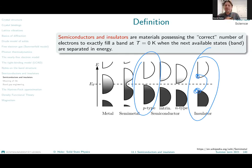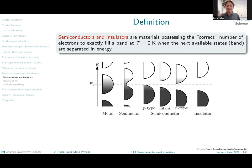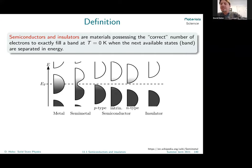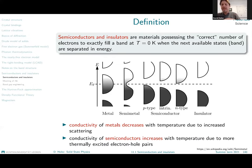We might have narrow band gap semiconductors, wide band gap semiconductors, or insulators. From the point of view of band structure theory, these are the same type of materials, all described by the fact that the Fermi level lies in the band gap. The difference between metals and semiconductors or insulators is in the temperature dependence of conductivity.